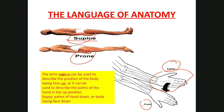Know the difference between the two instances in which the terms supine and prone are used. Supine describes the position of the entire body facing up; prone is face down. It's also used for just the position of the palms of the hand: supine means palms up, prone means palms down.